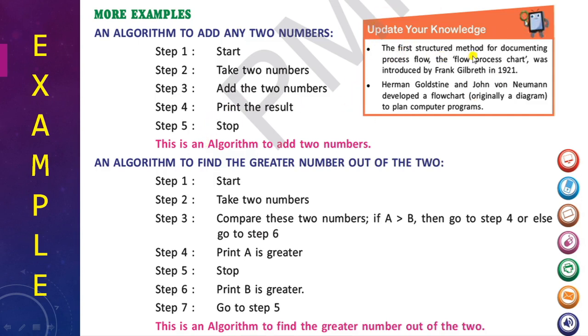The first structured method for documenting process flow was introduced by Frank Gilbreth in 1921. Herman Goldstine and John von Neumann developed a flowchart originally as a diagram to plan computer programs.